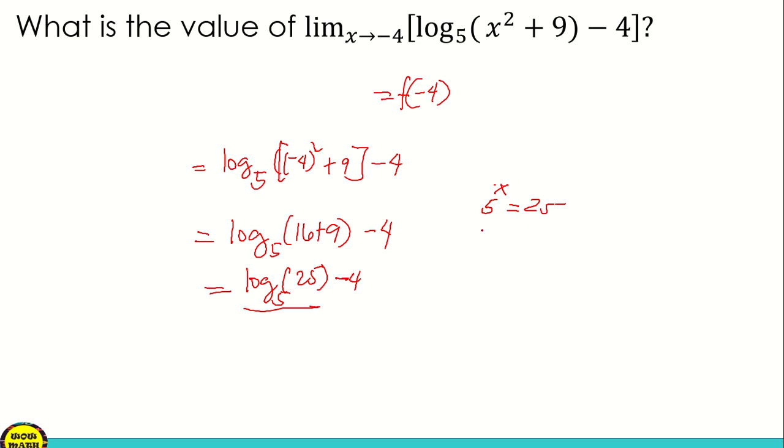5 raised to x. 5 raised to 0 is 1, 5 raised to 1 is 5, 5 squared is 25. So this equals 5 squared. Since they have the same base, x equals 2.